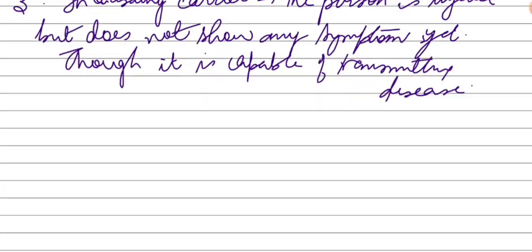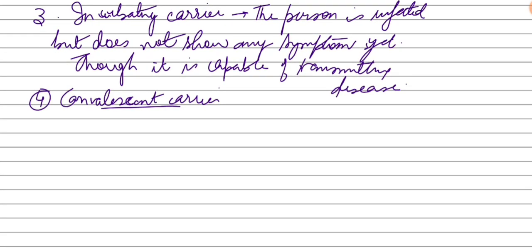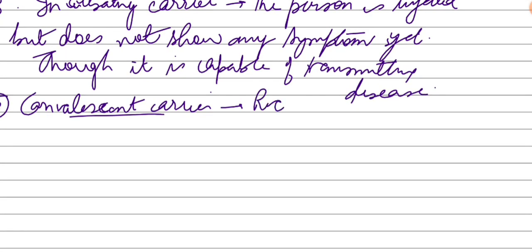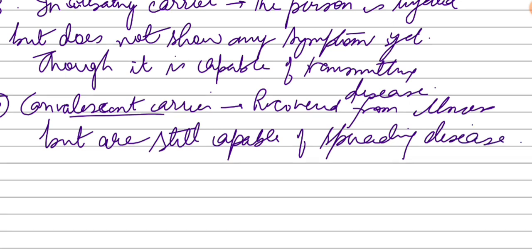The next category is convalescent carriers — those who have been infected but have now recovered. They have recovered from illness but are still capable of spreading disease. A very common example is chicken pox. If someone had chicken pox for 4-5 days with fever, and then they recover, they are still a convalescent carrier because there are still viruses in their body that can easily be transmitted to the environment and other persons.